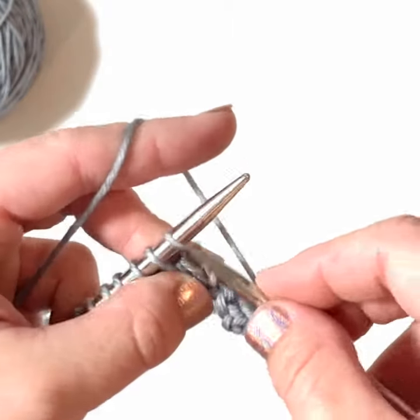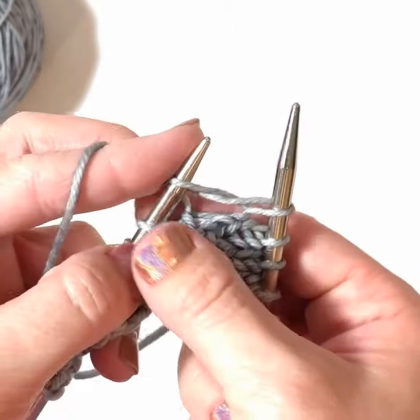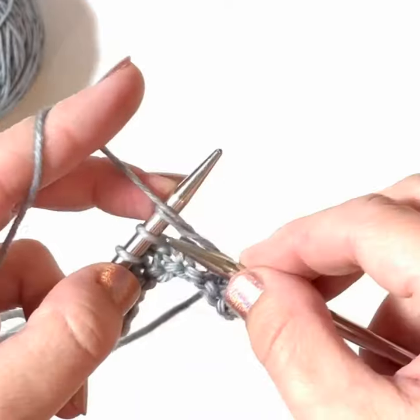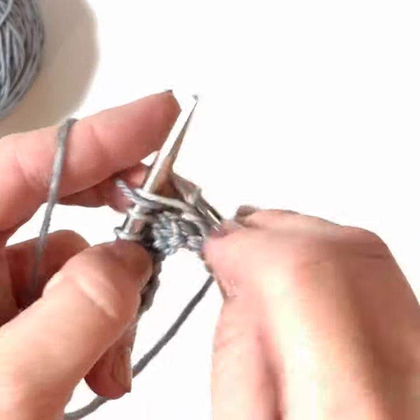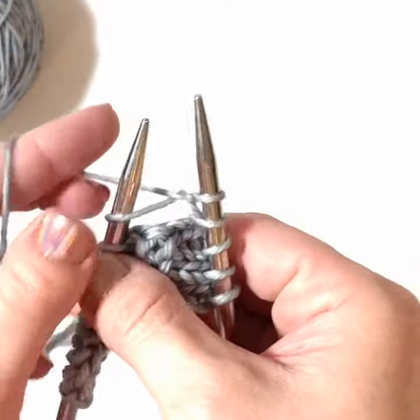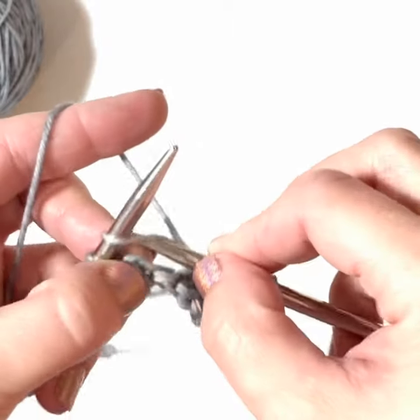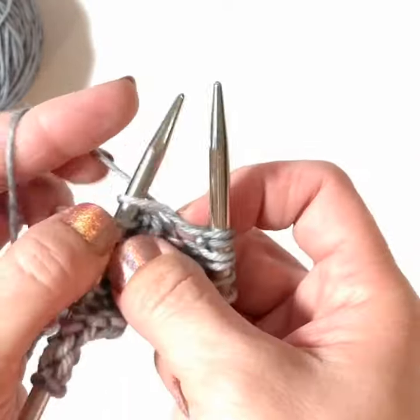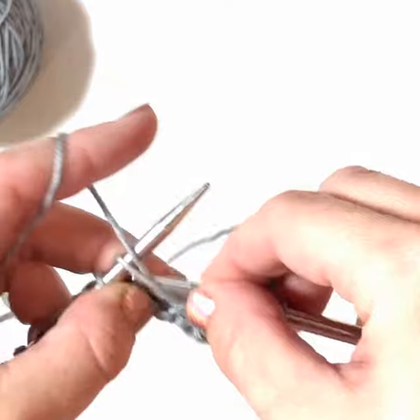To work the bobble for my mystery cowl knit along, you're going to knit into one stitch, but do not take it off of the left hand needle. Bring the yarn to the front, purl the stitch, bring the yarn to the back, knit that same stitch, and finally bring the yarn to the front and purl the same stitch.